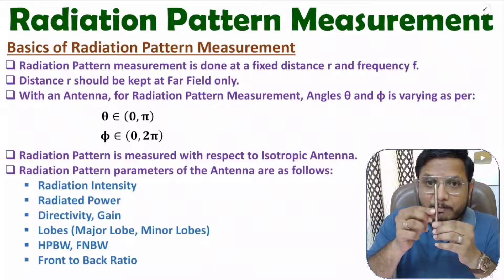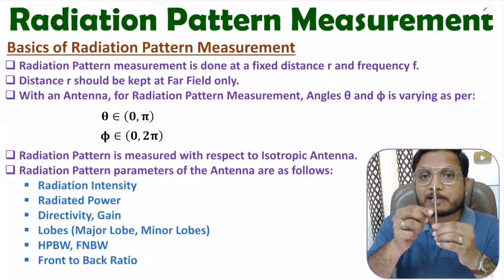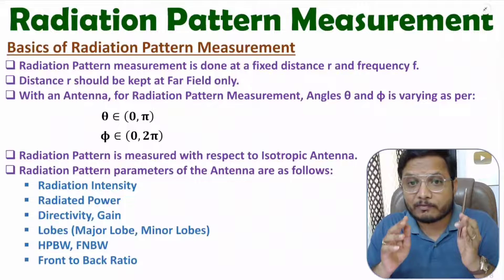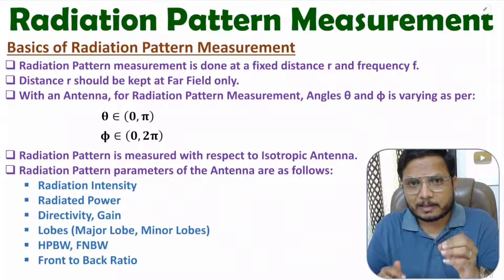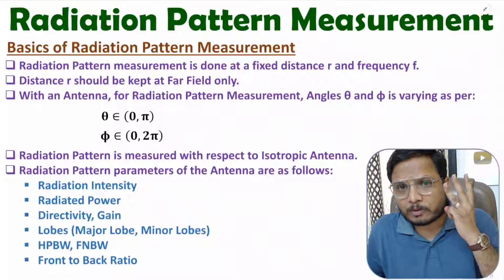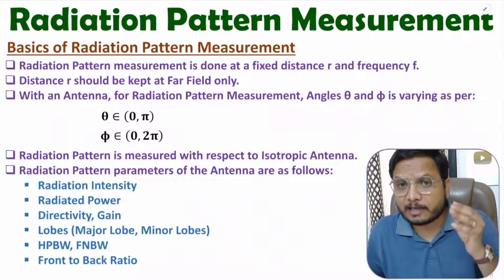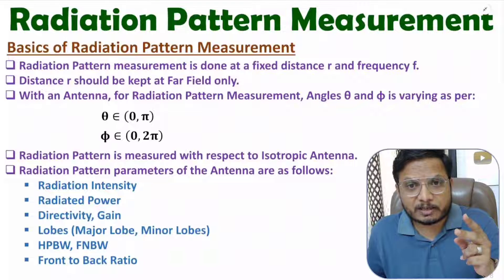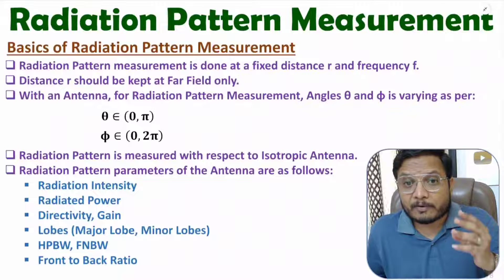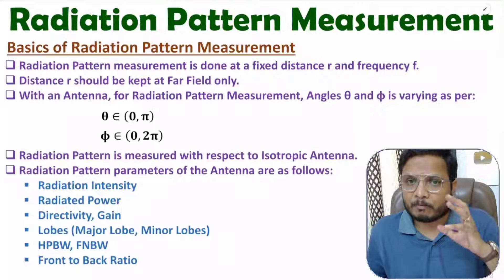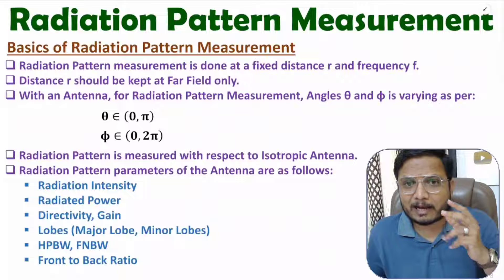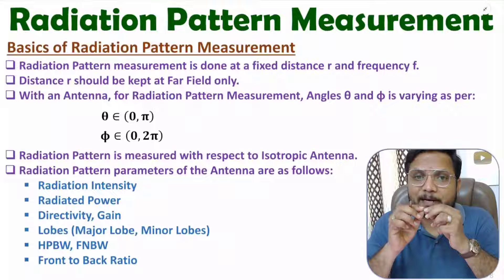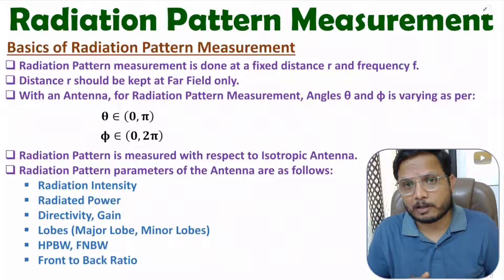Whatever distance we prefer for measurement of the radiation pattern, that distance should be in the far field only. With an antenna we have three different regions: the near field reactive region, the near field radiative region, and the far field radiative region. The proper pattern of an antenna comes in the far field only, so we keep distance r in the far field.